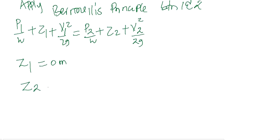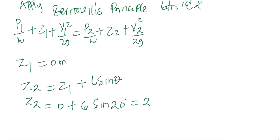Then Z2 is equal to Z1 plus the length of the pipe sine the angle at which the pipe is inclined. Meaning Z2 will equal 0 plus 6 sine 20 degrees, and this is equal to 2.052 meters.